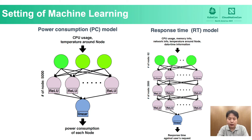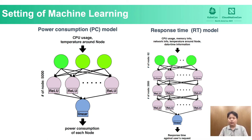WoW LB uses two machine learning models — the power consumption model and the response time model — to determine task allocation. Both models are based on neural networks. We tested other types of machine learning models such as SVM, and found neural network has the highest accuracy. After hyperparameter tuning, we chose ADAM as the optimizer for both models. The final design of the power consumption model has one hidden layer, while the response time model has three hidden layers.